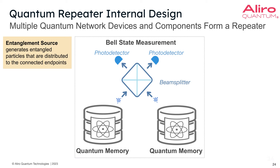These include things like an entanglement source. This entanglement source is what actually generates the entangled particles or photons, and these are then distributed to the connected points. Those connected points may be on either side of the repeater — they may be other repeaters, or they may be other endpoints or nodes.